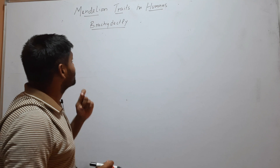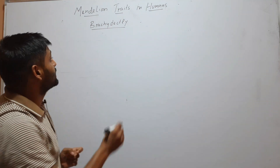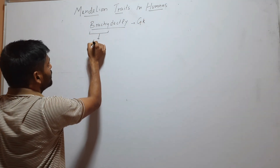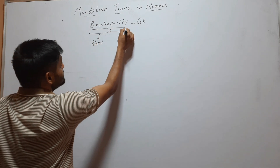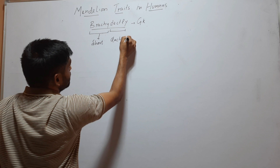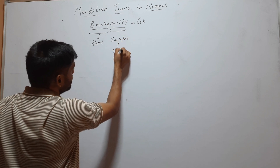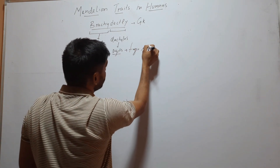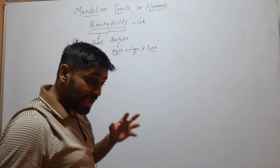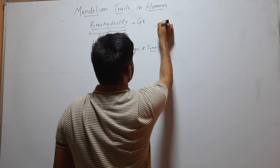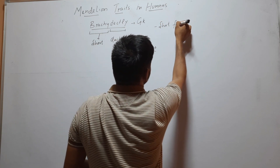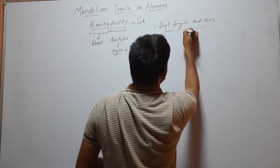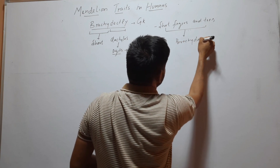In this video we will discuss Brachydactyly. What is Brachydactyly? This term is taken from the Greek language. 'Brachy' means short, and 'dactyly' is taken from 'dactylos' which means digits — digits means fingers and toes. So when any human has short fingers and toes, this condition is called Brachydactyly.